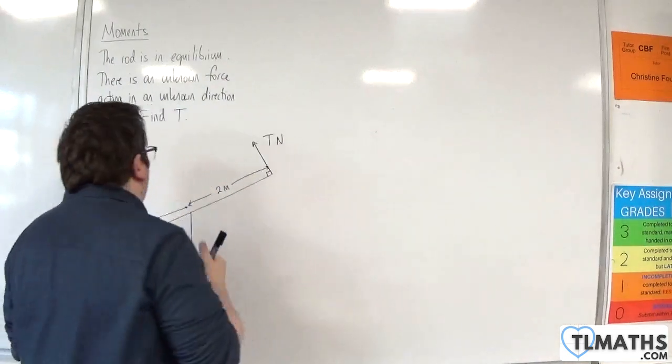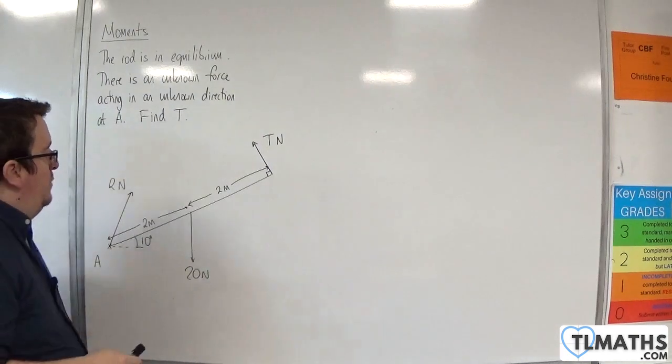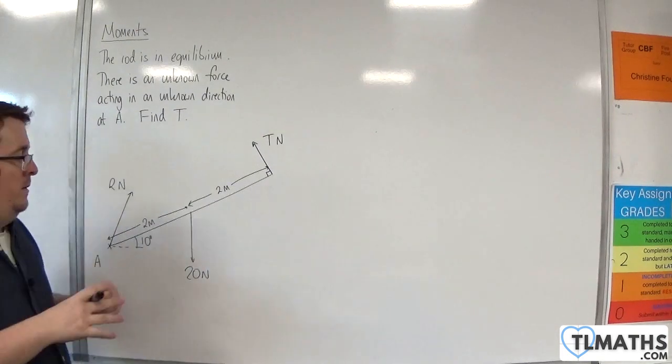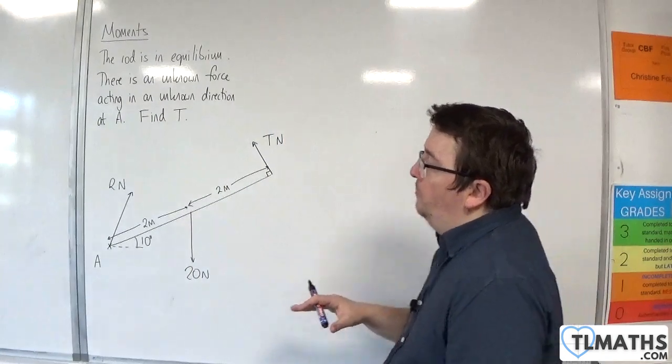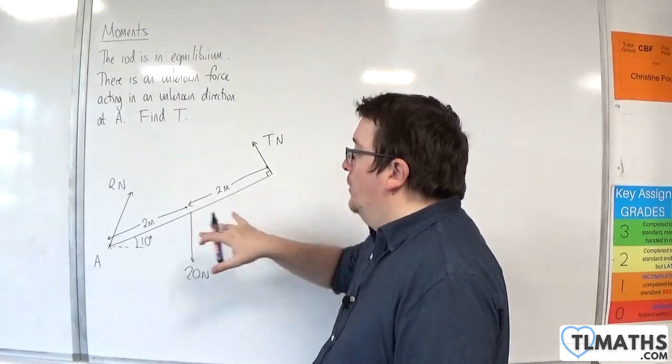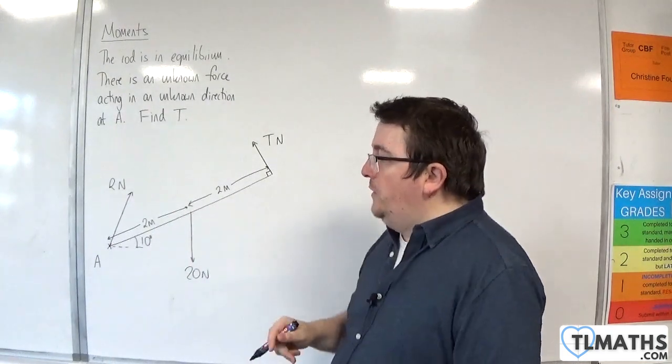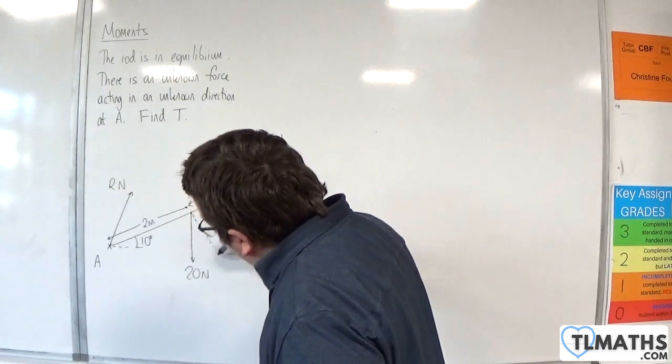And we can do that by just taking moments about point A. So in order to do that, you will have seen working with forces on slopes by this point. So when you're looking at this slope, we've got this force 20 Newtons. Usually what I would do is break that up into its components.